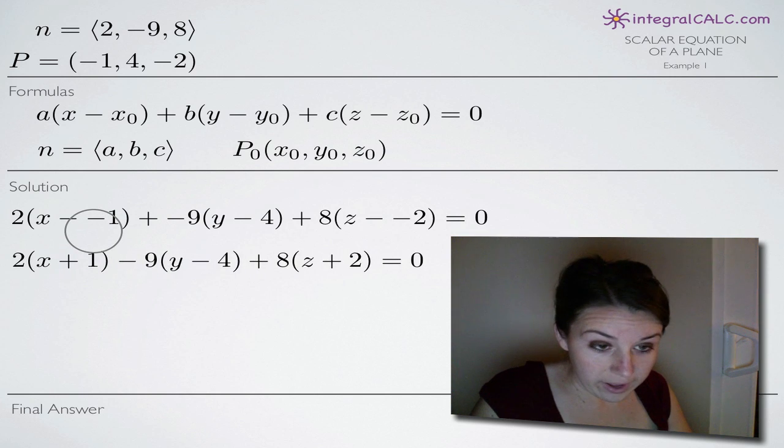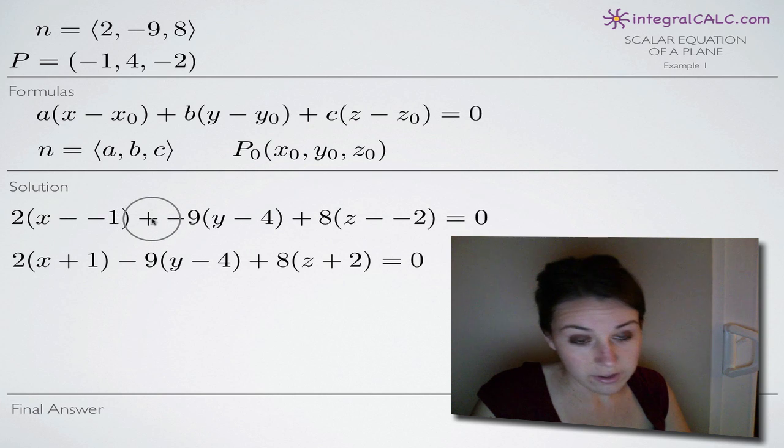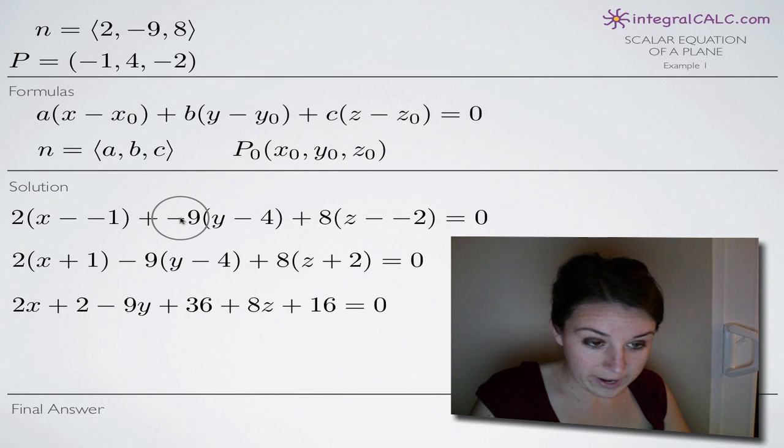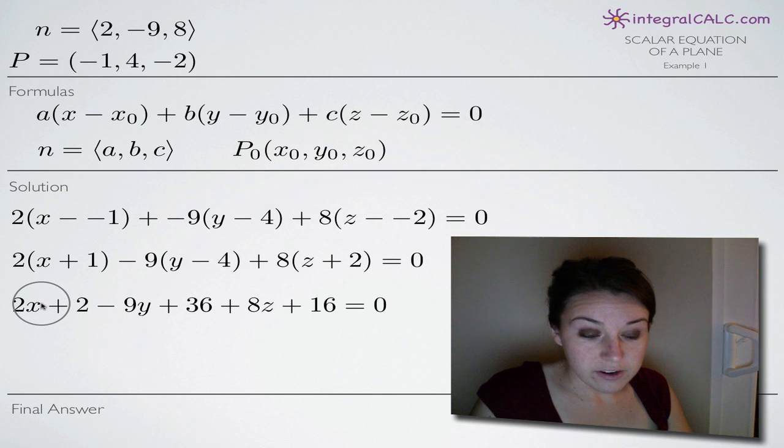And then to simplify, I'm just going to go ahead and remove double negatives like this, change this plus a negative just to a negative, etc. And then in the next step, we'll go ahead and distribute the coefficients. You could leave the equation in this form, but we can simplify it further if we multiply out.